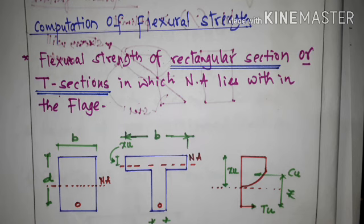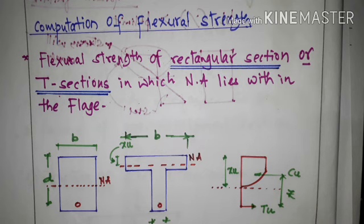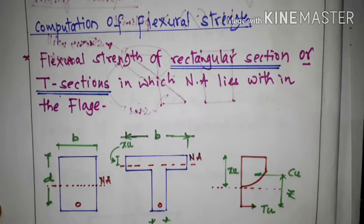This part you may have studied in your subject — Design of RCC Structures — where when the neutral axis in a flanged or T-section lies within the flange, that T-section behaves as a rectangular section. You take the width of the flange as the width of the section. Here we are going to discuss that same concept again.